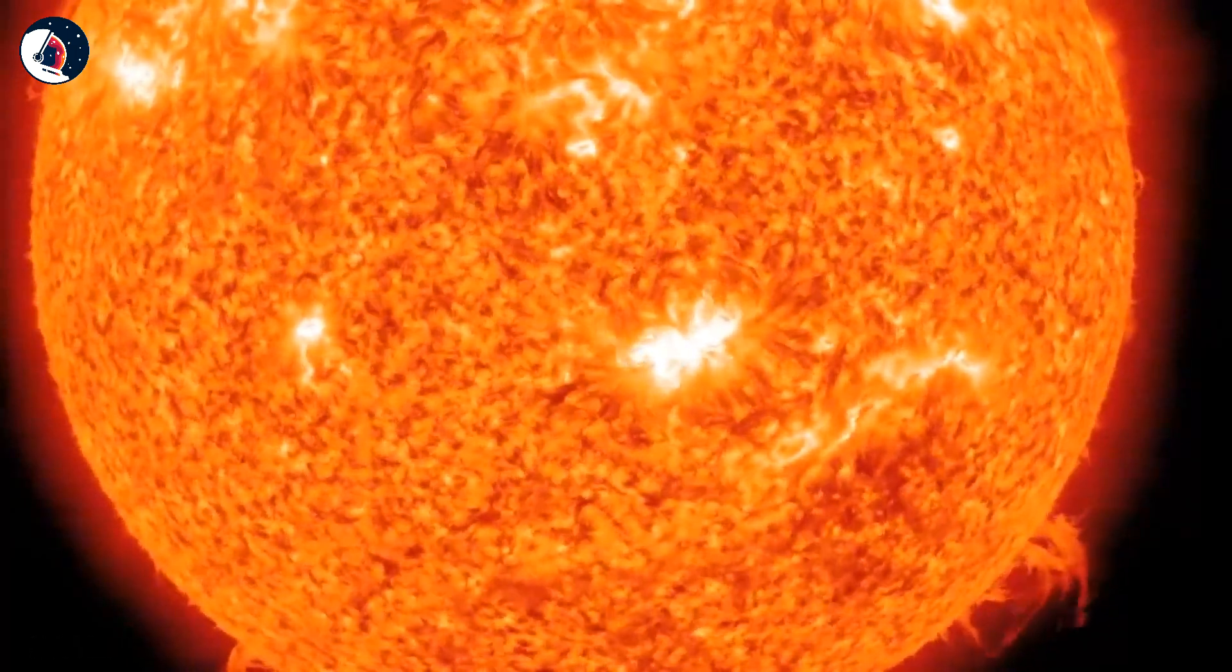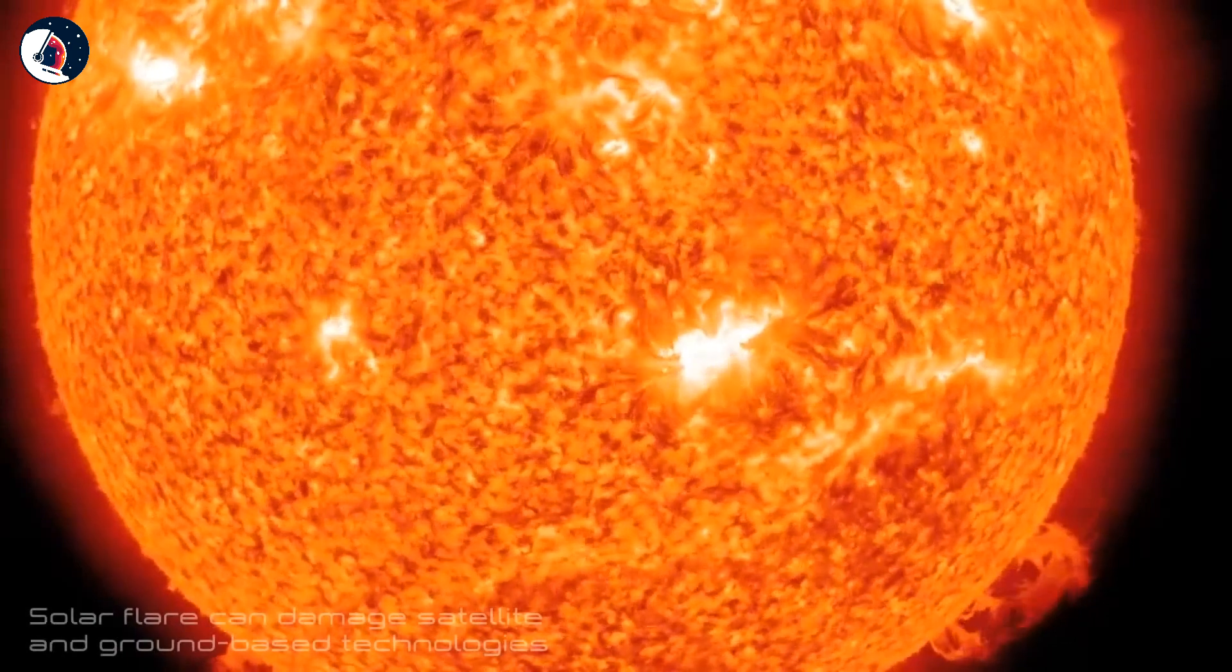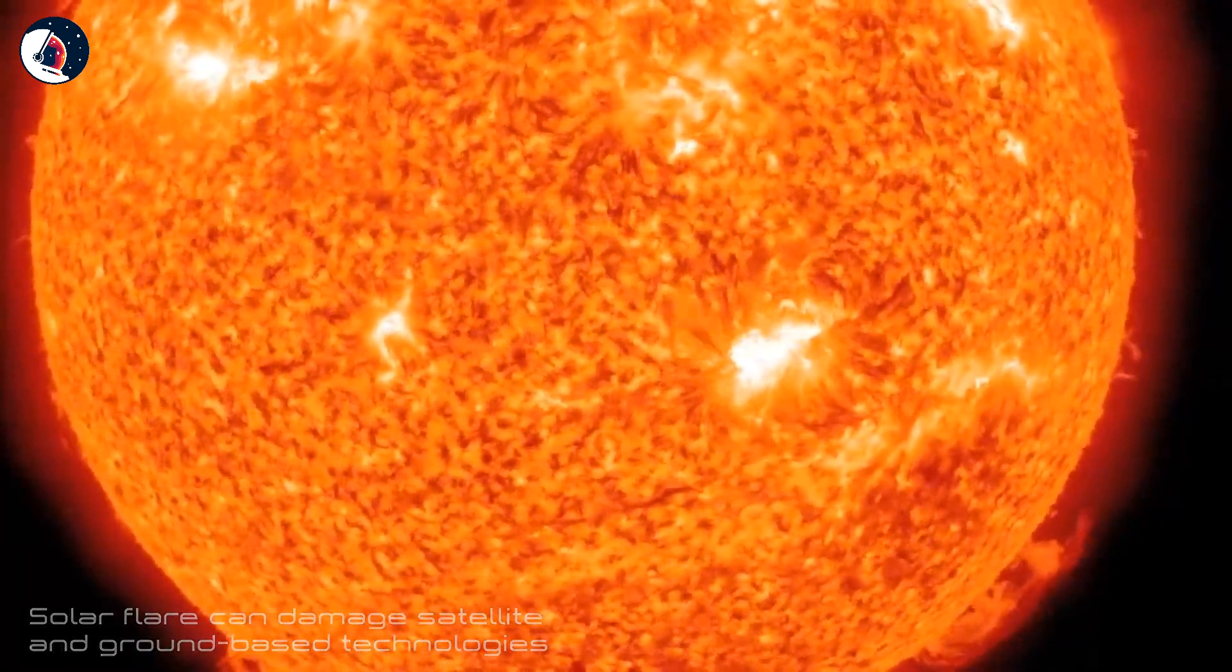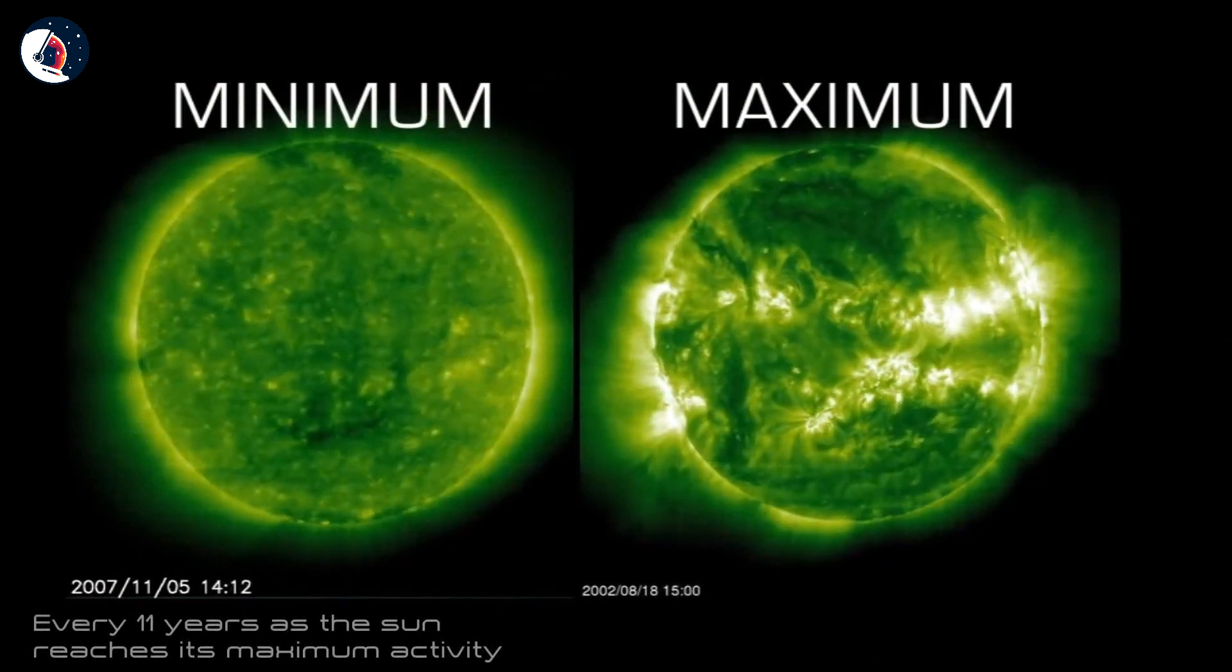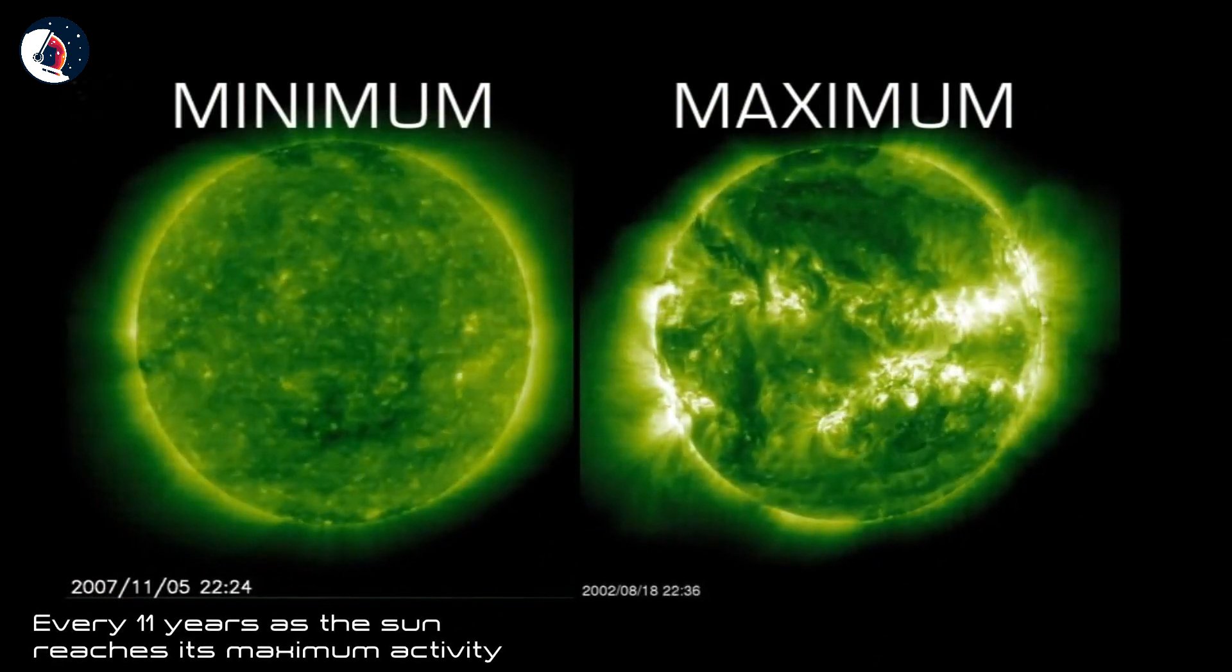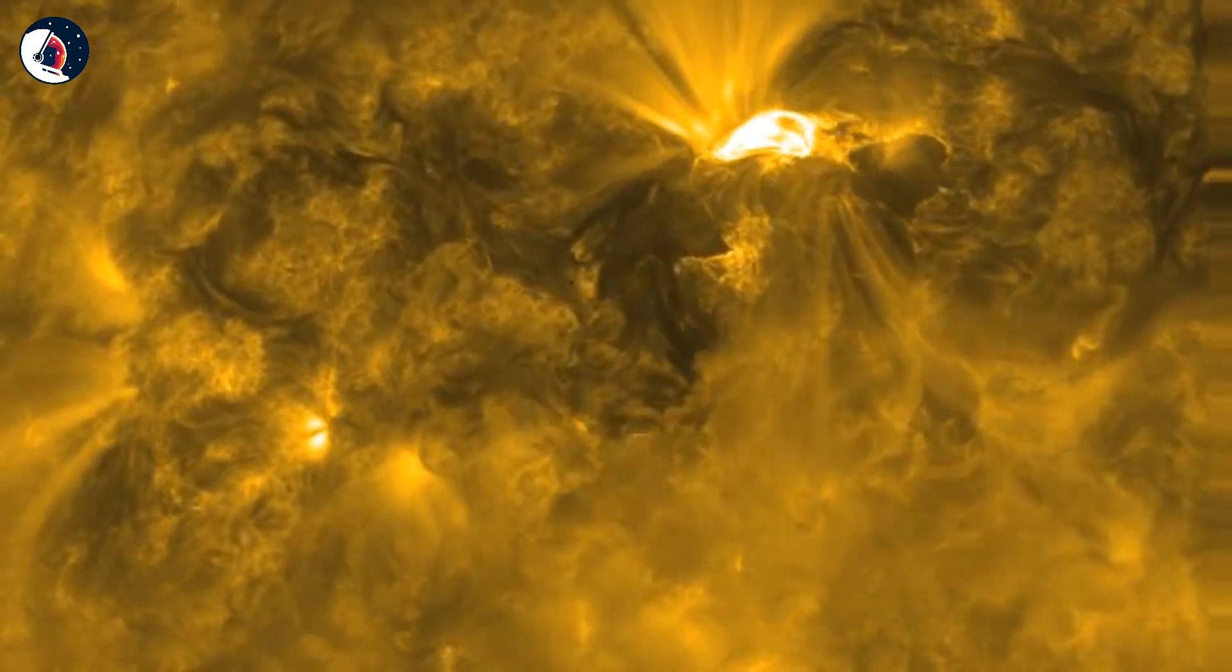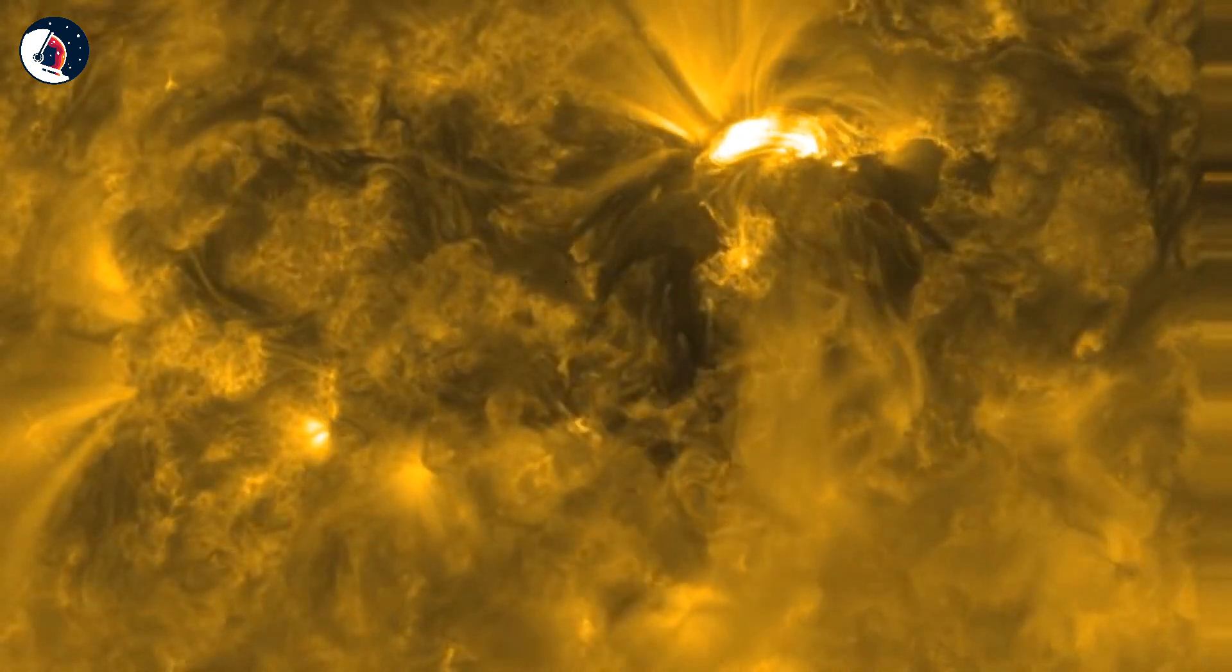Solar flares may seem like faraway events, but they can damage satellites and even ground-based technologies and power grids. Every 11 years, as the sun reaches its maximum activity, they become bigger and more common, and that increases the chances that one will significantly affect Earth.